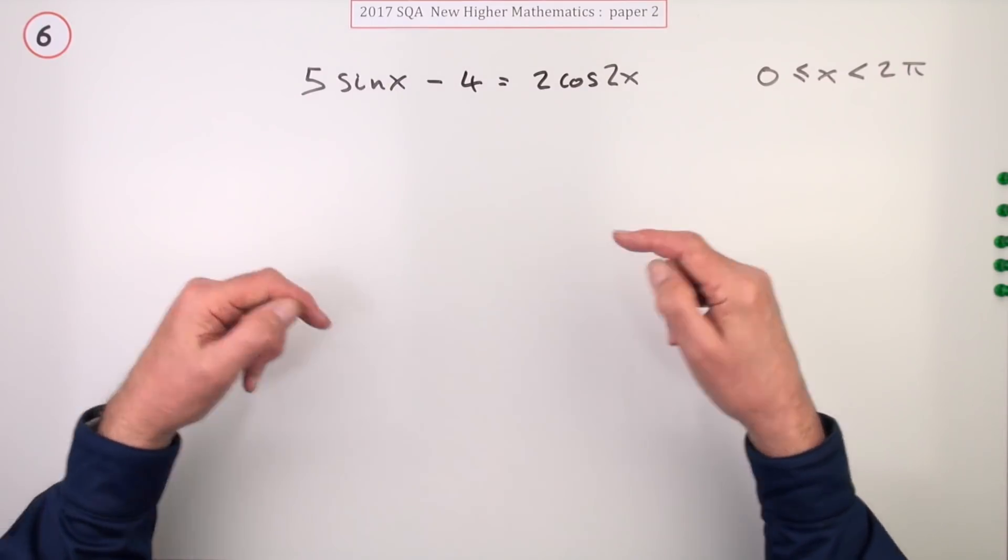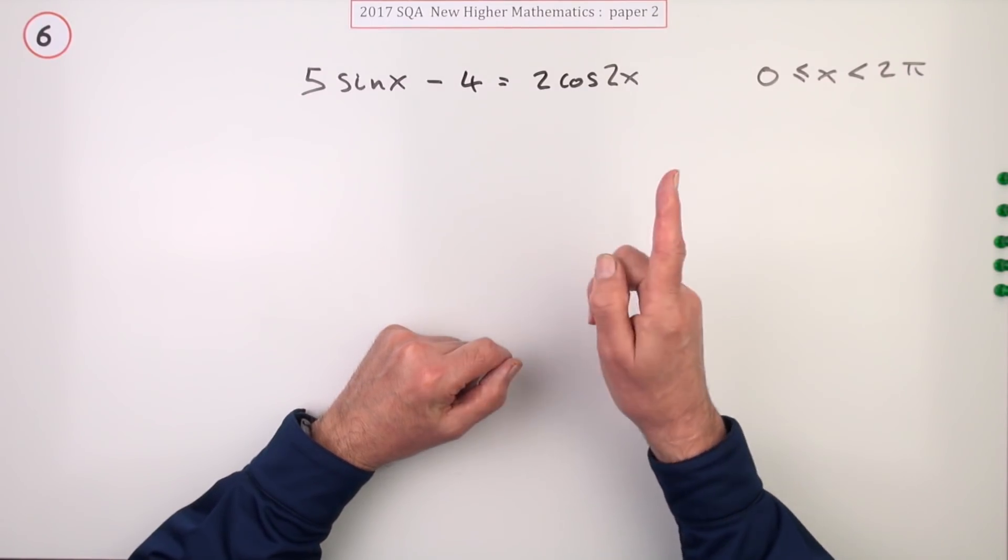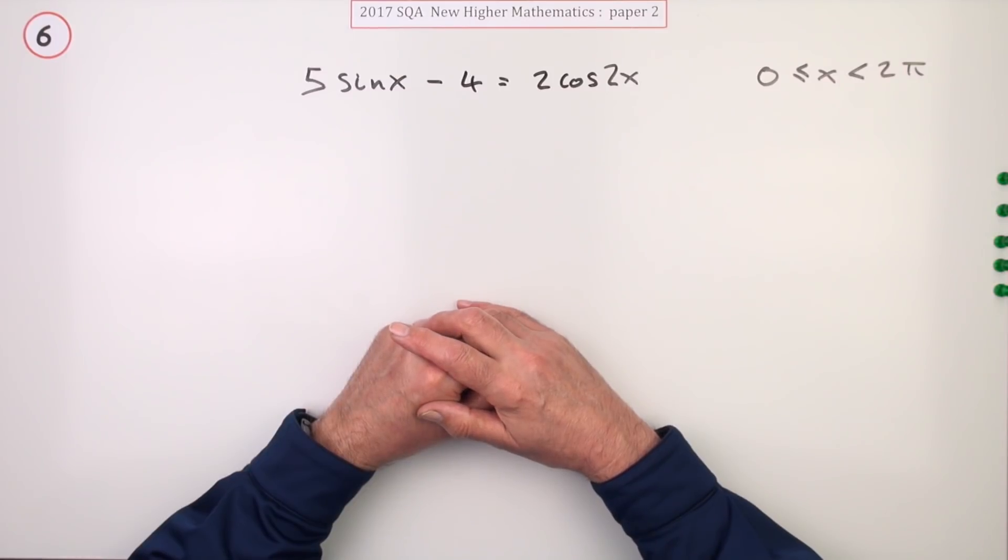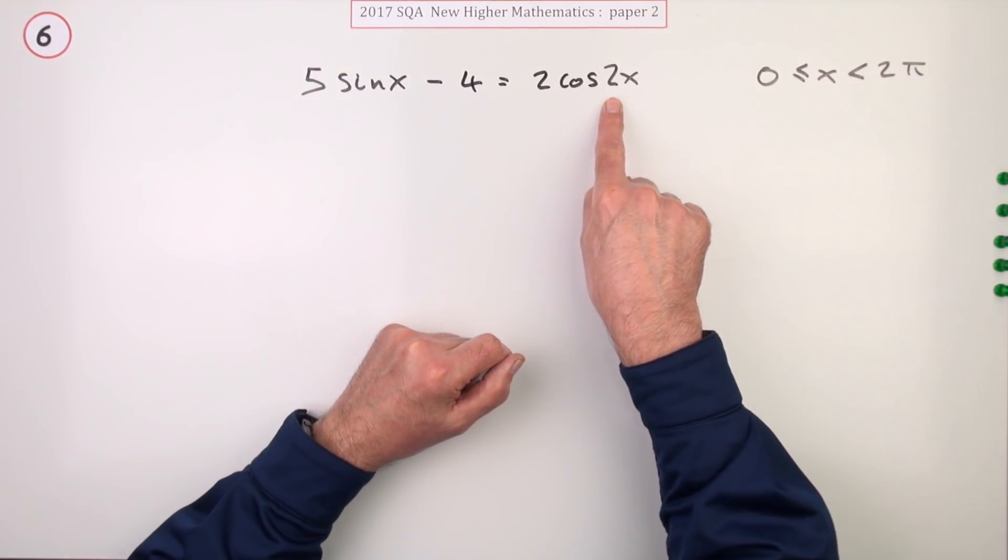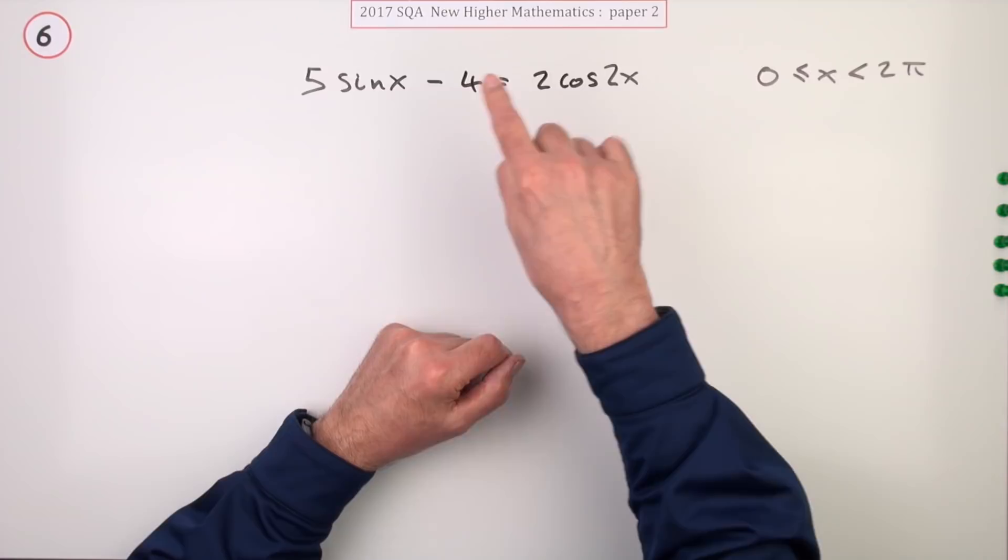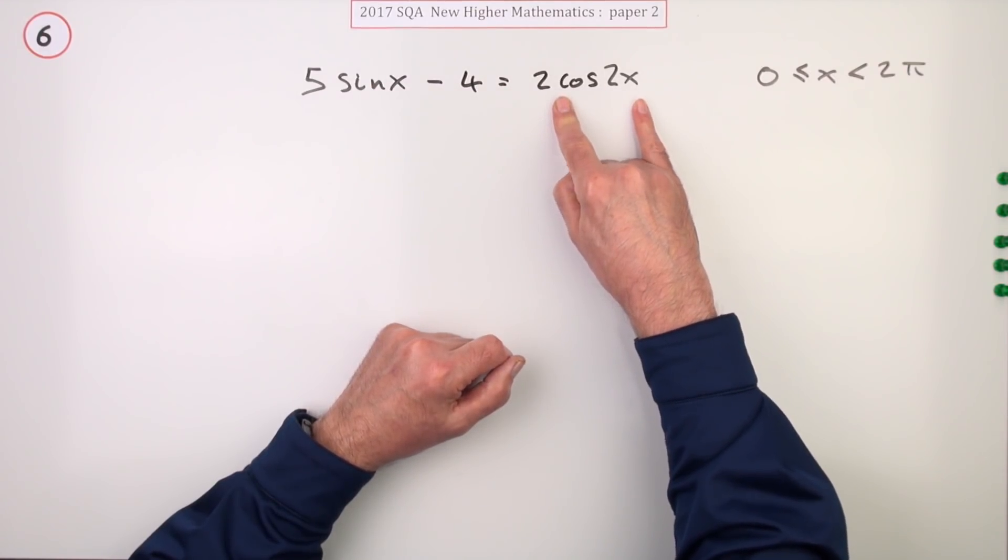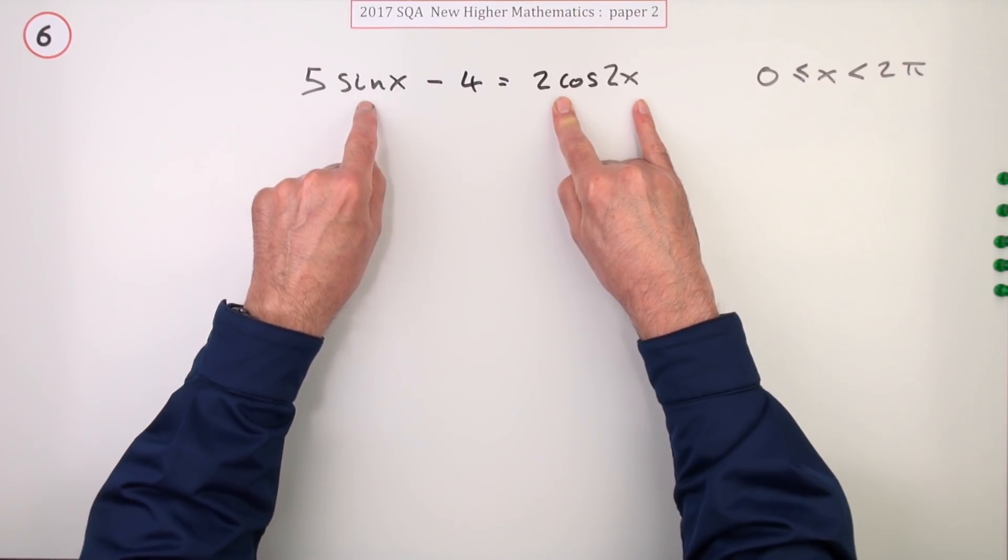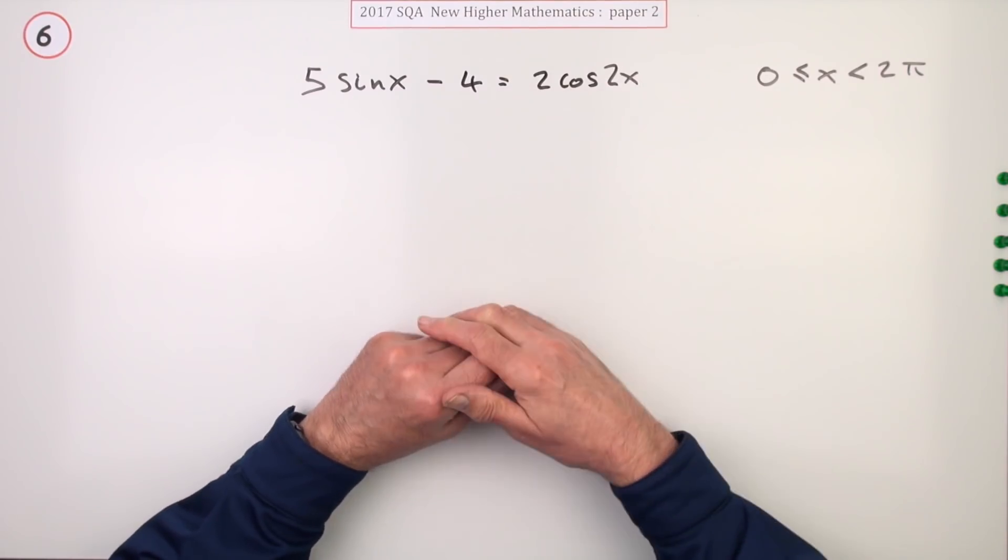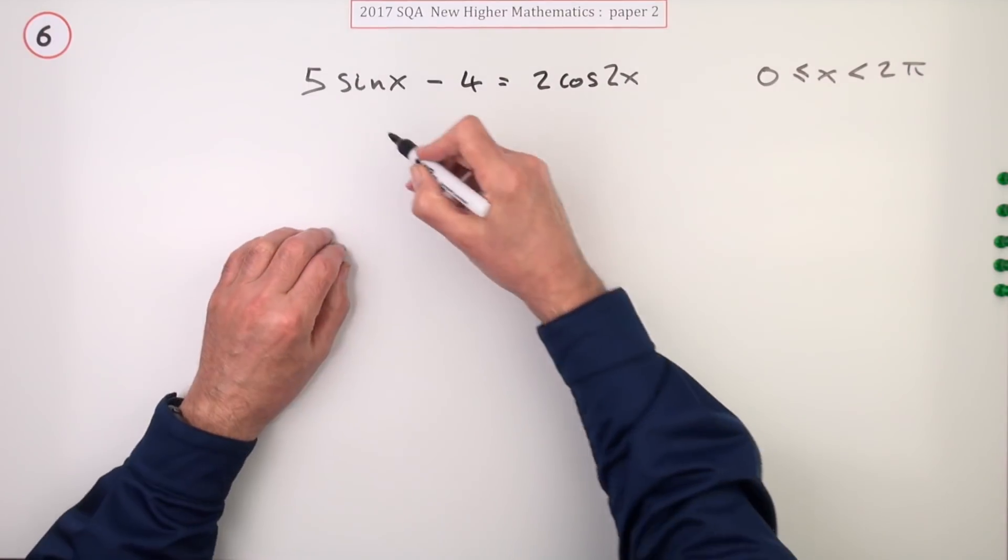Well, double angle, this will need to get changed back to this single angle here and it'll need to match it. So when you look up the three forms, you'll be wanting the one that matches just sine, that'll be the one minus two sine squared. That's your first step.